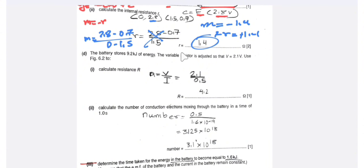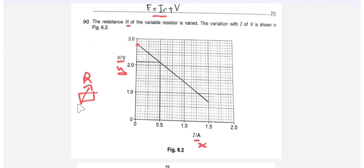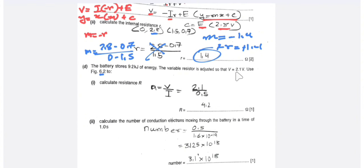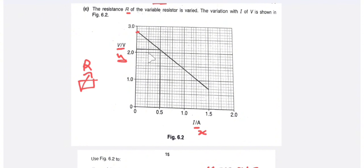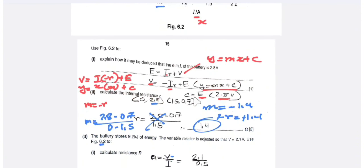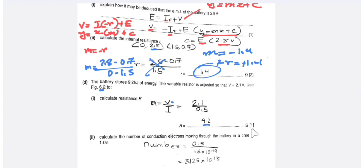The battery stores 9.8 kJ of energy and the variable resistor is adjusted so that V = 2.1V. Using figure 6.2 to calculate resistance R: when V = 2.1V, the current from the graph is 0.5A. So resistance R = voltage / current = 2.1 / 0.5 = 4.2 Ω.